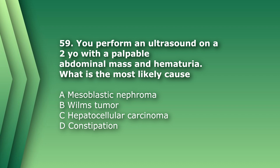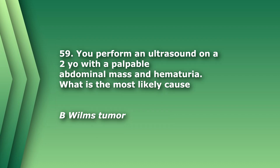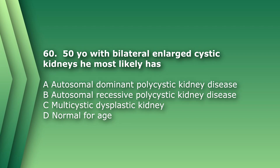Question 59: You perform an ultrasound on a two-year-old with a palpable abdominal mass and hematuria — what is the most likely cause? A) mesoblastic nephroma, B) Wilms tumor, C) hepatocellular carcinoma, D) constipation. A mesoblastic nephroma is usually seen in the neonatal period; hepatocellular carcinoma is an adult liver tumor; constipation can present as a palpable mass, but with the age and hematuria, Wilms tumor is most likely — it is the most common renal malignancy in children under five.